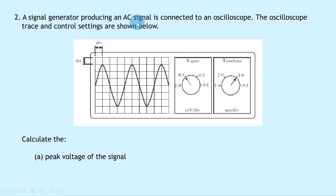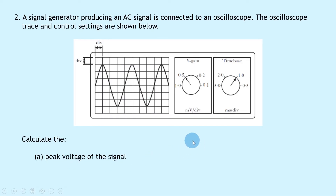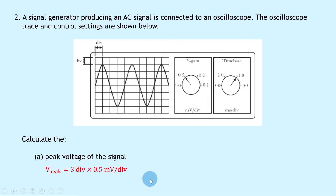Question two says a signal generator producing an AC signal is connected to an oscilloscope. The Y-gain setting is at 0.5 millivolts per division and the time-based setting is at 1.0 milliseconds per division, with two and a half waves visible on the screen. Part A asks to calculate the peak voltage. The amplitude is three divisions, so V-peak equals three divisions times 0.5 millivolts per division, giving 1.5 millivolts.